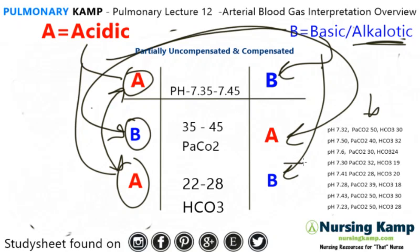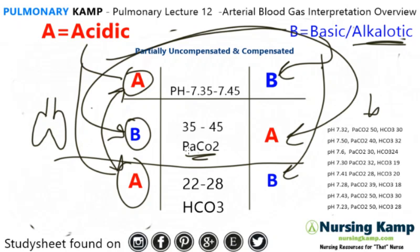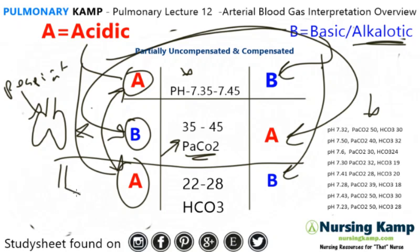Then we connect the letters and interpret. We need a couple more steps because the PaCO2 is regulated by respirations — so this section is respiratory, and respirations will either go up or down based on what's going on with the acid-base. That's compensation. The next is regulated by the kidneys, and the kidneys are called metabolic. So here's the metabolic section. Please see my other lectures where I cover this more in depth.